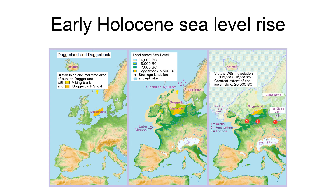The EHSLR spans meltwater pulses 1b and 1c, between 12,000 and 7,000 years ago. Meltwater pulse 1b, between ca. 11.4 to 11.1 ka, was a 7.5 m rise over about 160 years centered at 11.1 ka, which includes the Younger Dryas interval of reduced sea level rise at about 6.0 to 9.9 mm per year.